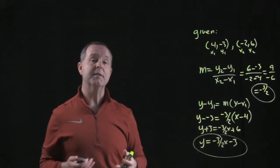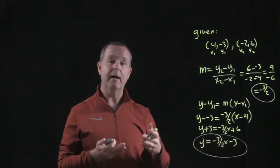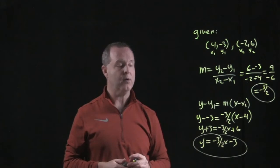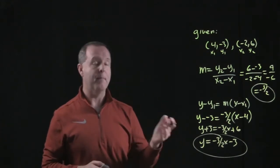y equals negative 3 halves x minus 3. And there you go. There's the equation of the line, is y equals negative 3 halves x minus 3.